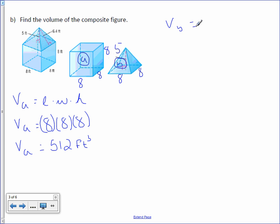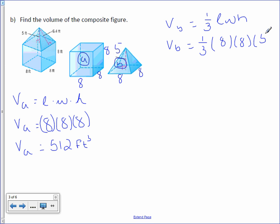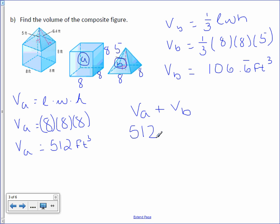The volume of figure B — the pyramid — is one-third times length times width times height. Leave one-third as a fraction. Length is 8, width is 8, and height is 5. You will get a repeating decimal: volume equals 106.6 repeating feet cubed. To find the total composite volume, 512 plus 106.6 repeating gives us 618.6 repeating feet cubed.